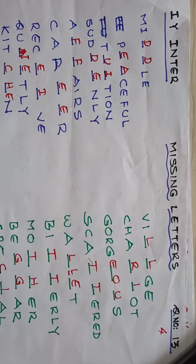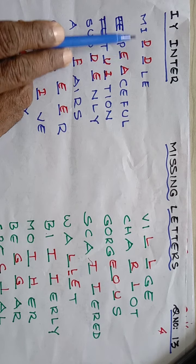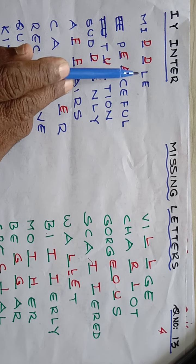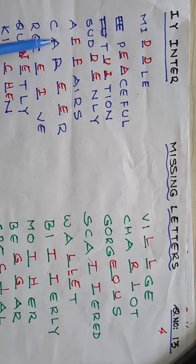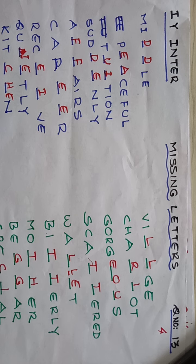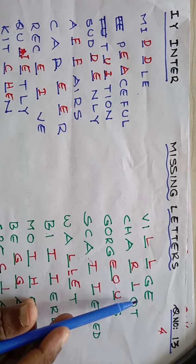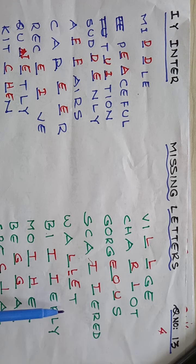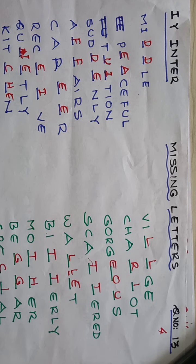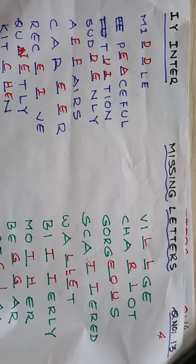We also made an exercise based on this. Words like: middle — M-I-D-D-L-E, peaceful, tuition, suddenly, affairs, career, receive, quietly, kitchen, enough, village, chariot, gorgeous, scattered, valid, bitterly, mother, beggar, special, and popular.